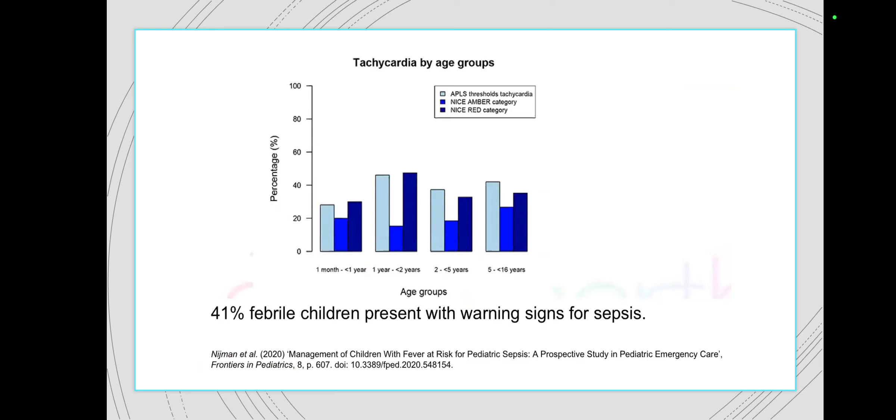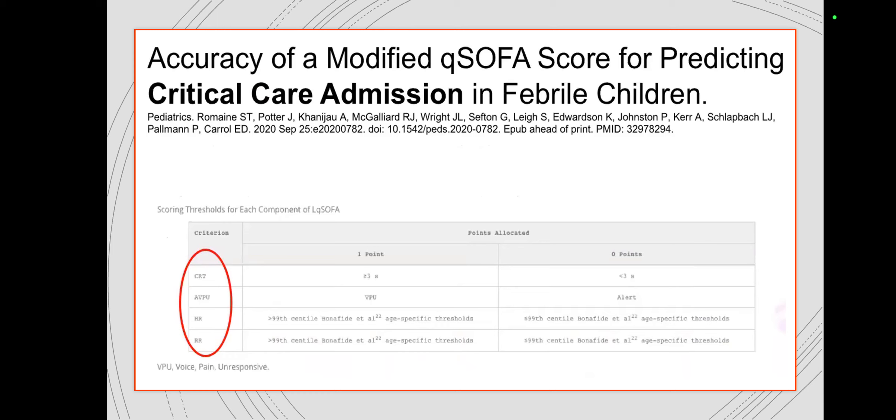That study found that 41% of febrile children presenting with warning signs of sepsis would have been considered as having sepsis. They divided the results using the APLS threshold, the NICE guideline amber category, and the NICE guideline red category. You can see how the definition of sepsis varies across these guidelines — it becomes more sensitive in the red category and APLS tachycardia thresholds — but again, does that really identify true sepsis?